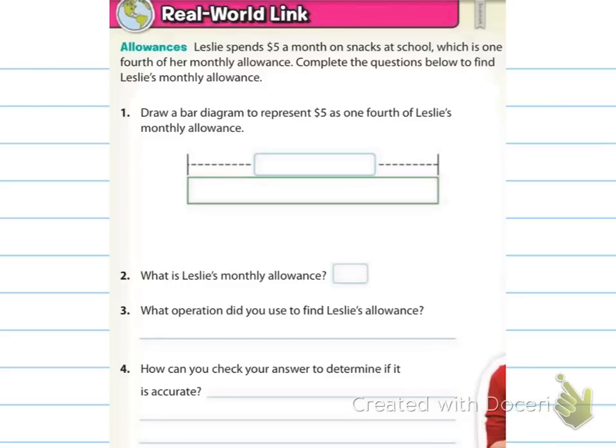Draw a bar diagram to represent $5 as one-fourth of Leslie's monthly allowance. And then what is Leslie's monthly allowance, and what operation did you use? How can you check your answer to determine if it's accurate? So go ahead and fill these in, and when you come back, I'll give you the answers. Pause now.